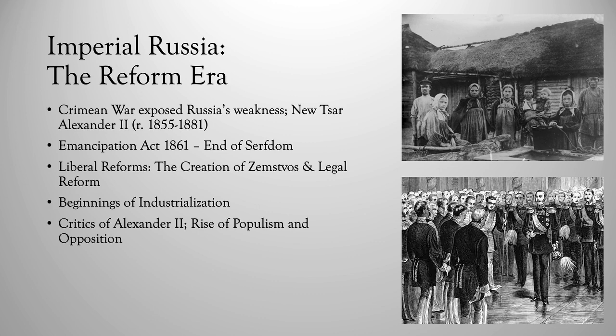The most important reform from Alexander II was the Emancipation Act of 1861, which basically brought about the end of serfdom in Russia. Historians often note that both Russia and the United States had enslaved populations — the United States with African American slaves and Russia with the serfs. In the 1860s, both countries emancipated their enslaved populations, showing a larger trend in world history and modernization. Alexander II believed that ending serfdom was key to Russia's modernization, and as a result of the Emancipation Act, 23 million serfs were now made legally free of their landlords.